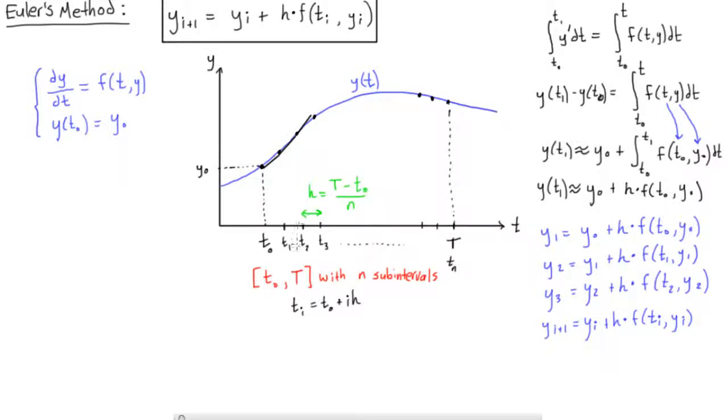And you'll also notice that the iterations on the t axis, you can find out where they are. Ti is equal to t0 plus i times h, where h is the width.